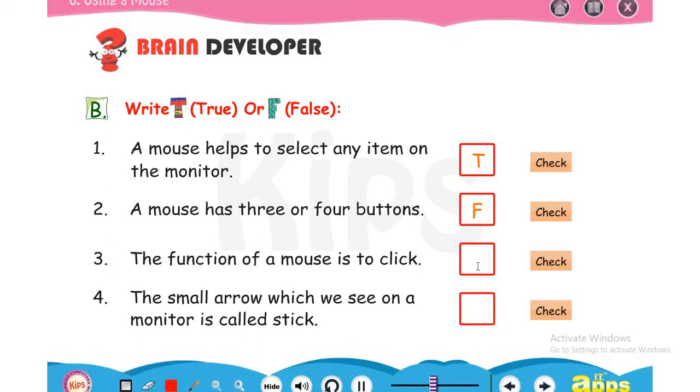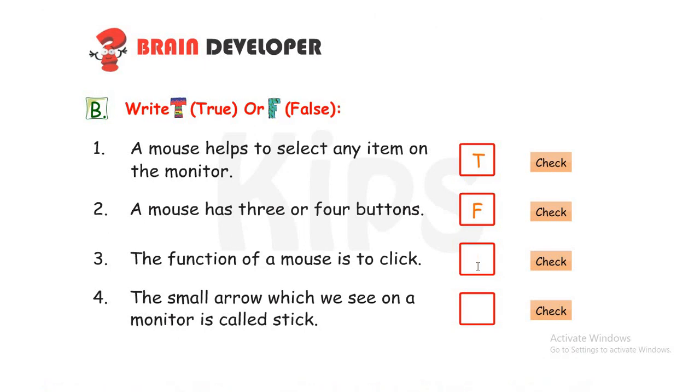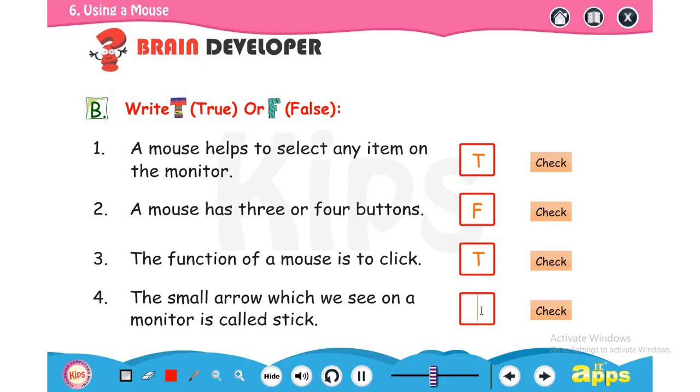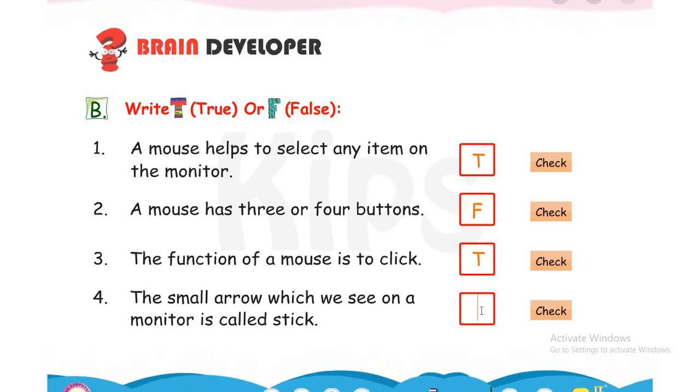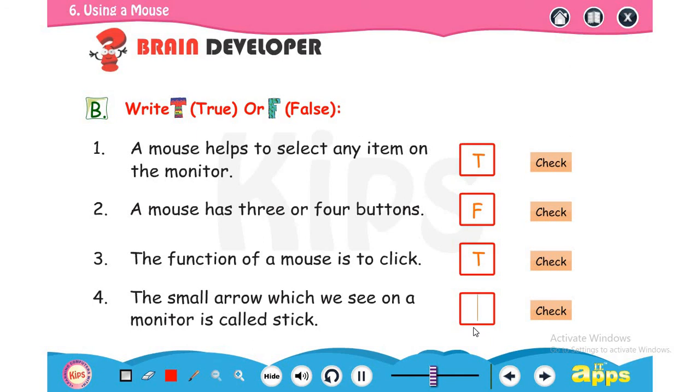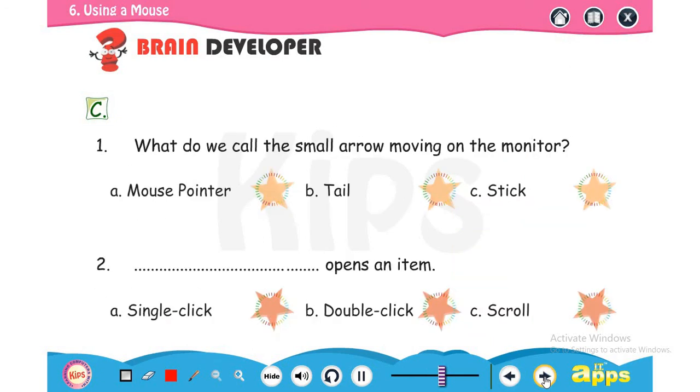The function of a mouse is to click. Yes, it is one of the functions of mouse to click. The small arrow which we see on a monitor is called stick. So it is false because it is called as a mouse pointer.